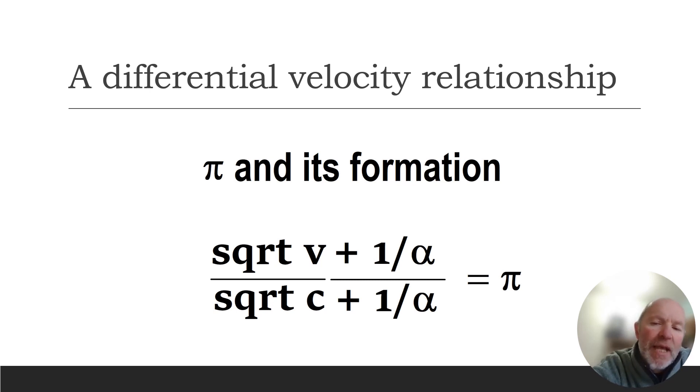And what I'm saying is I have a mathematical approach that allows me to convert distance into velocity, and that's biologically relevant. And the mathematics allows me to then look at how pi is being able to be generated by differential velocities related to the initial velocity, the square root of V, and the final velocity, square root of C.